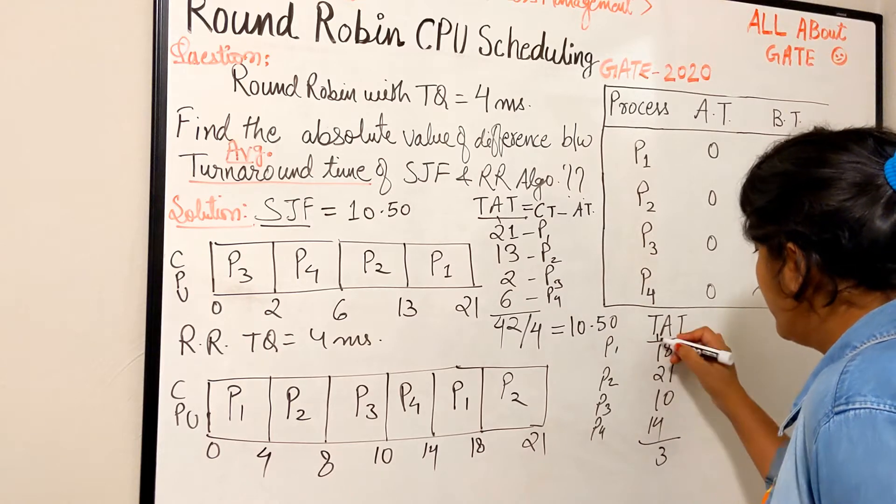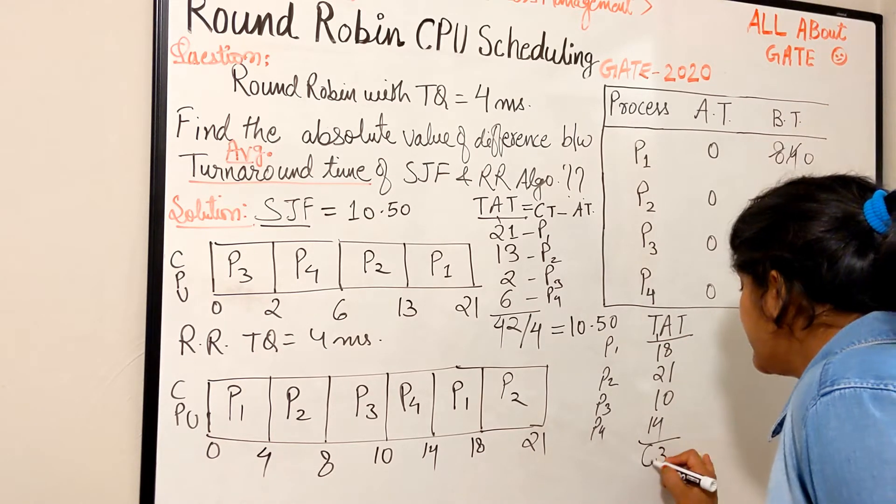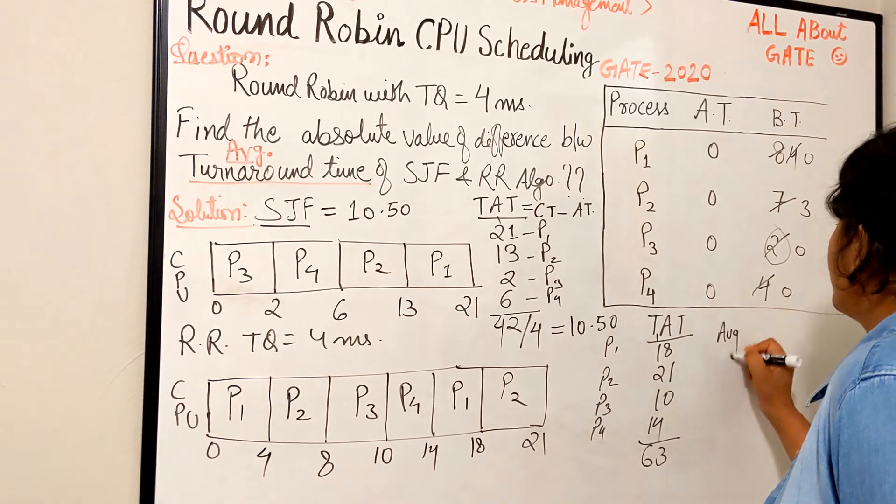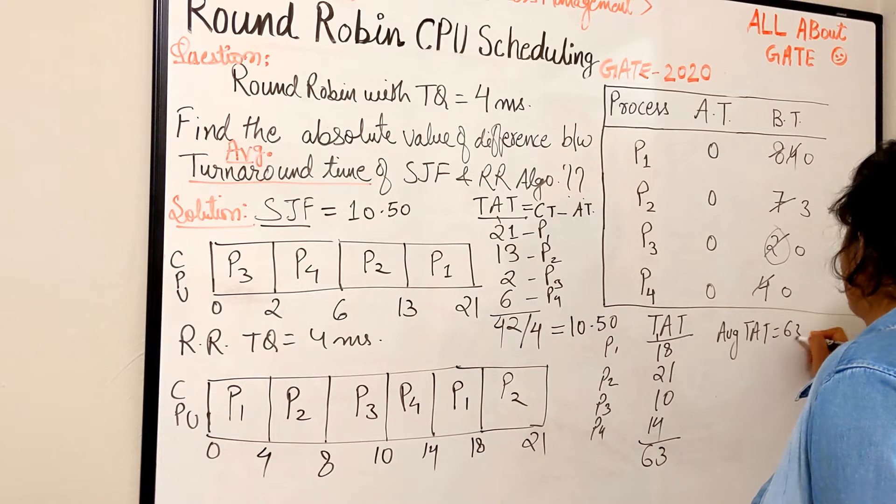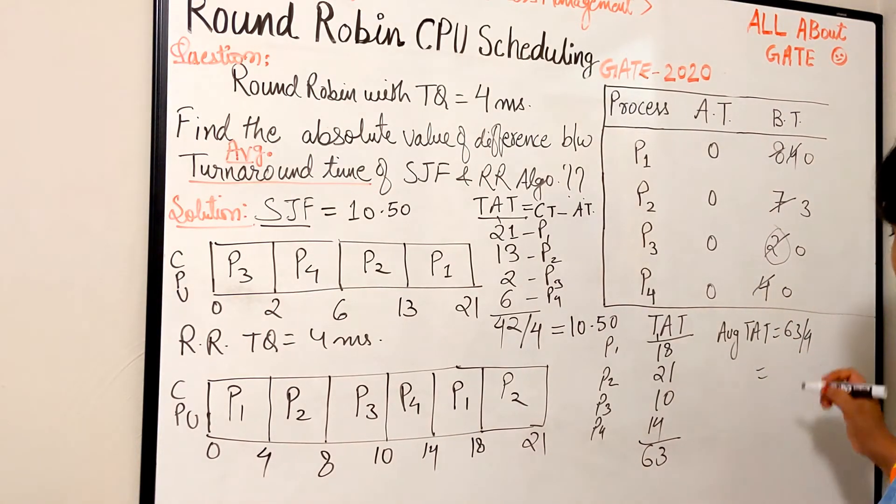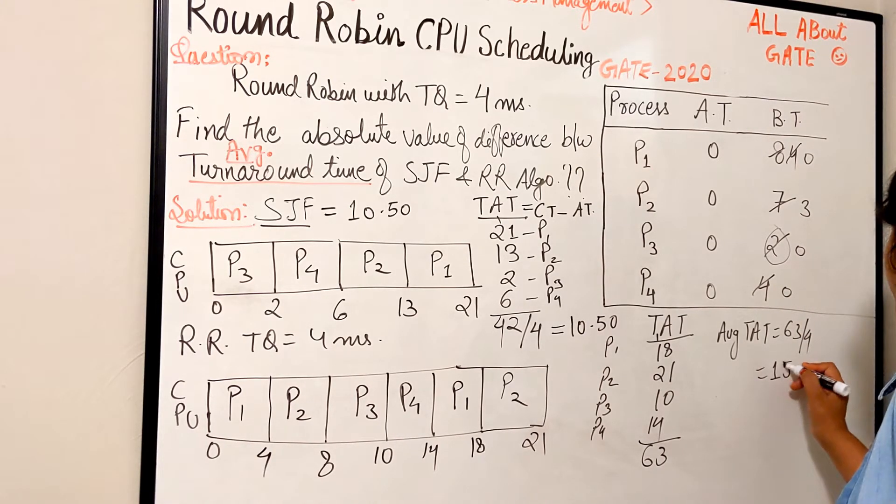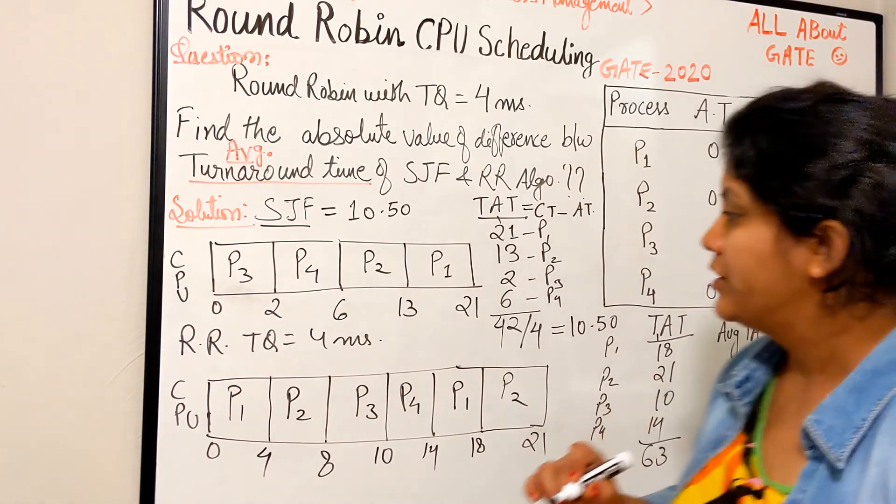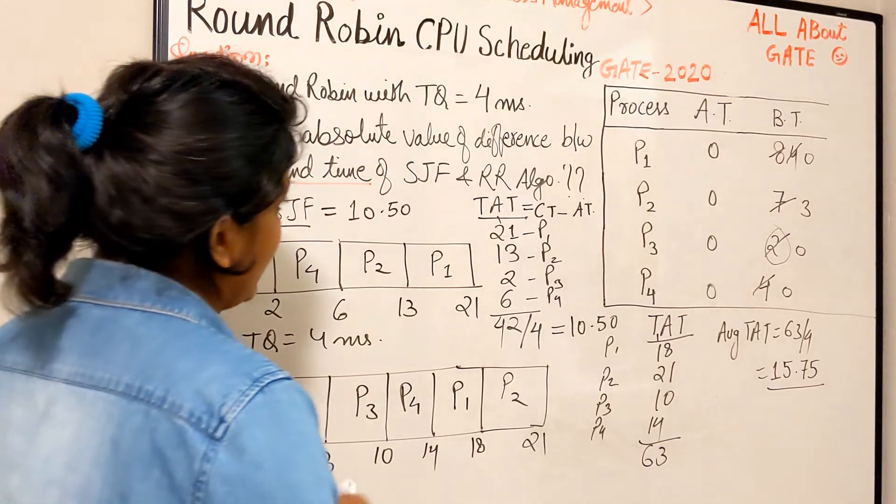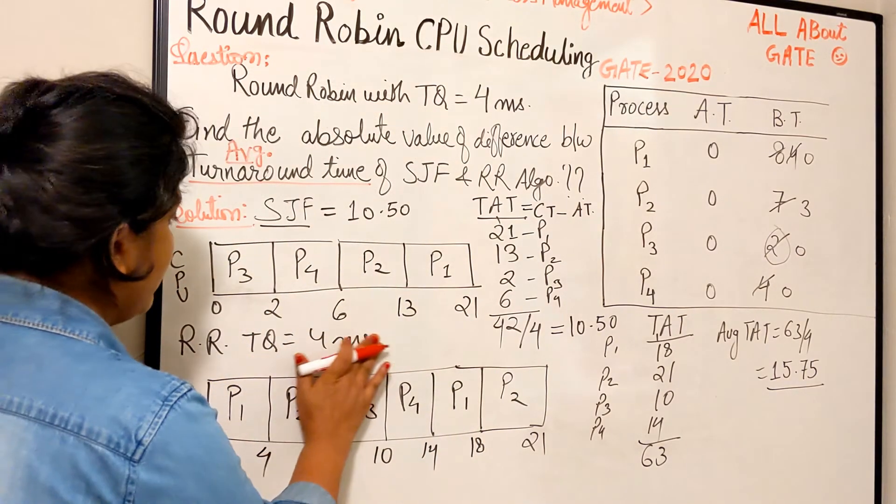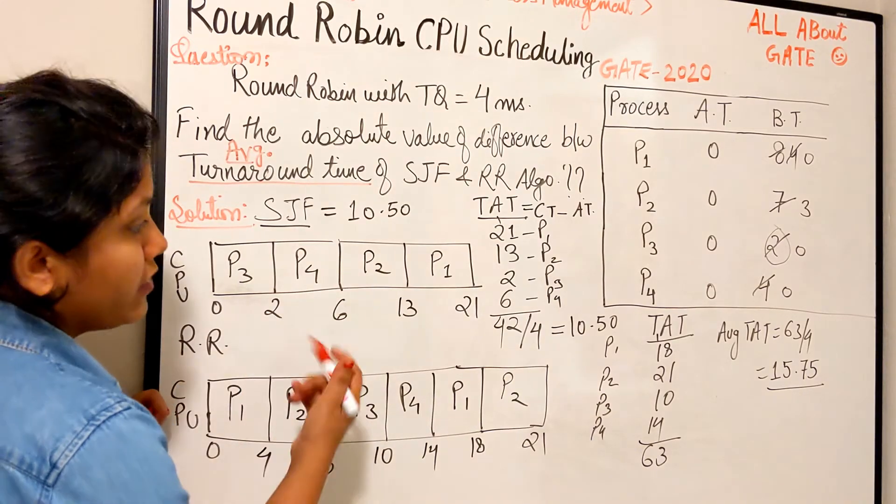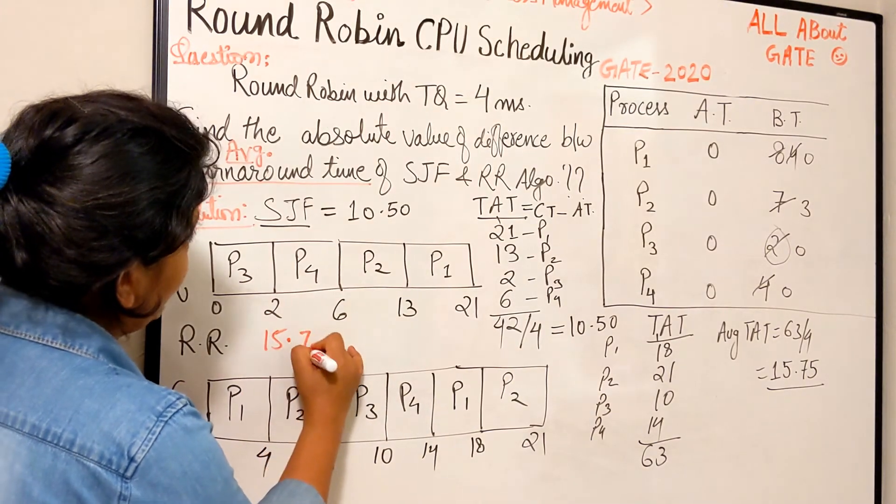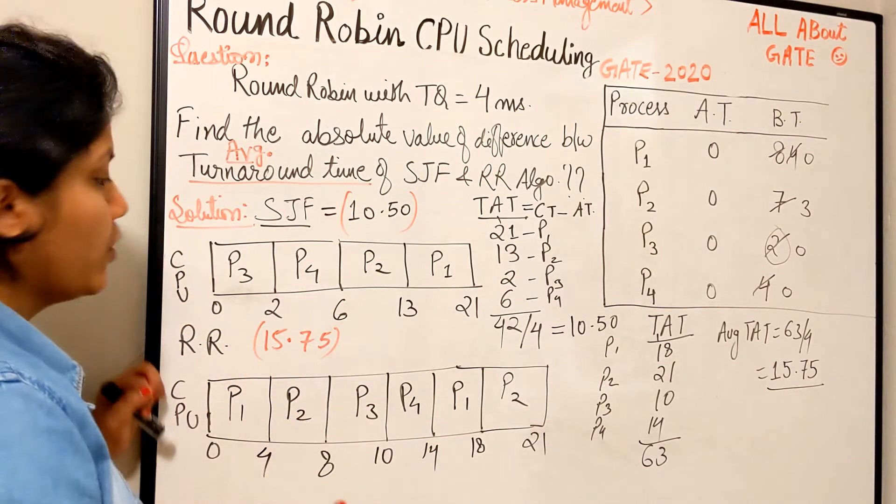Let's quickly take the sum: 18 plus 21 is 39, plus 10 is 49, plus 14 is 63. Total is 63. For average turnaround time, 63 divided by 4. The value is 15.75. That's the average turnaround time for Round Robin.